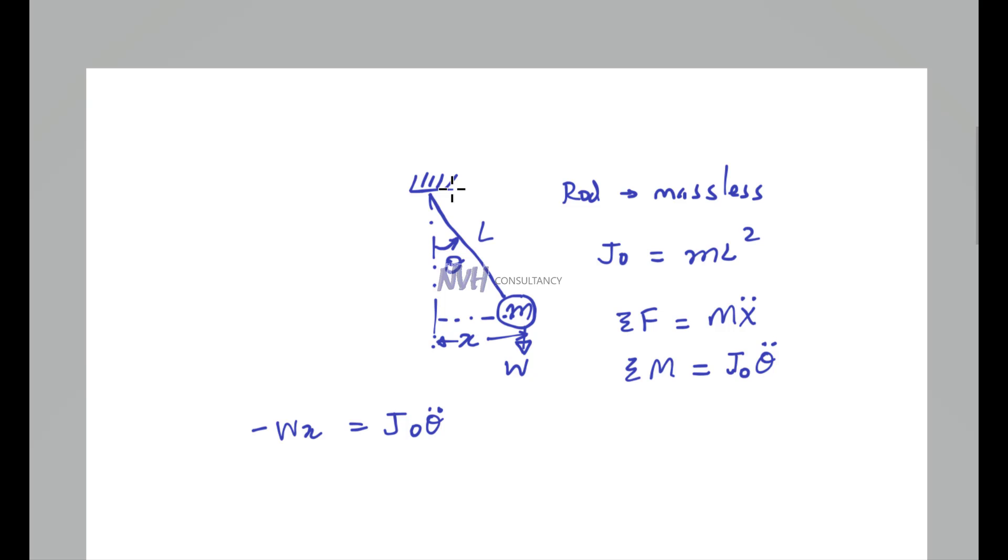What you have is J₀θ̈ plus, when you take this to the right-hand side, you'll end up with W, which is mg, and distance X equals zero.